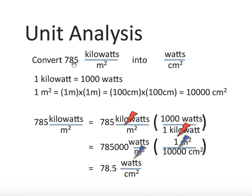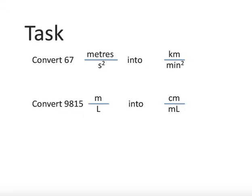Considering significant digits, we have three significant digits in 785, so we need three significant digits in our answer. These conversions have infinite significant digits because they are definitions — not something measured by someone. So I leave you with this task: please complete both conversions. Have a great day!